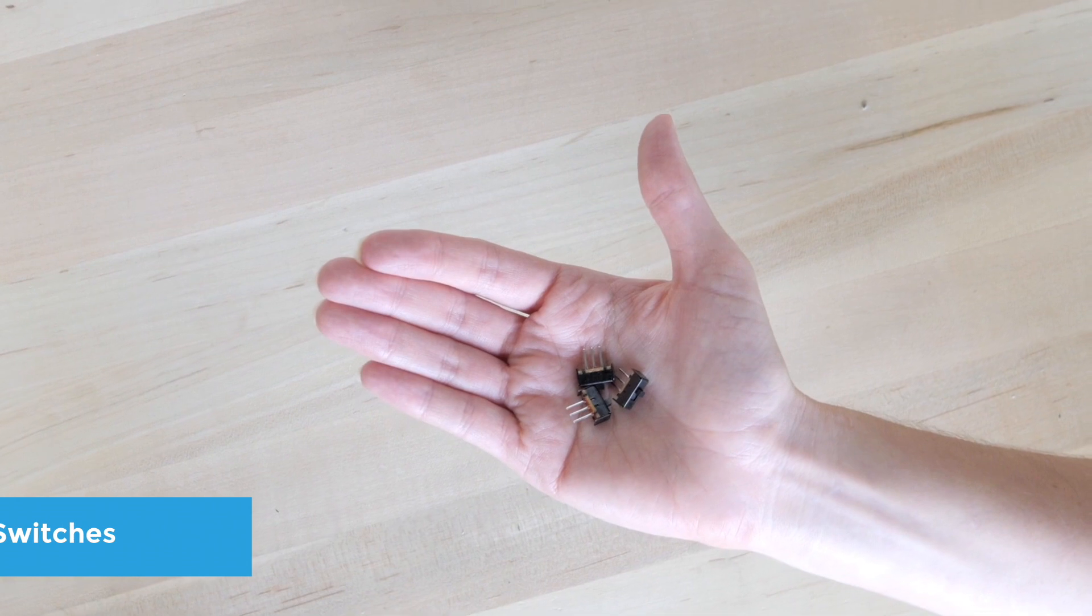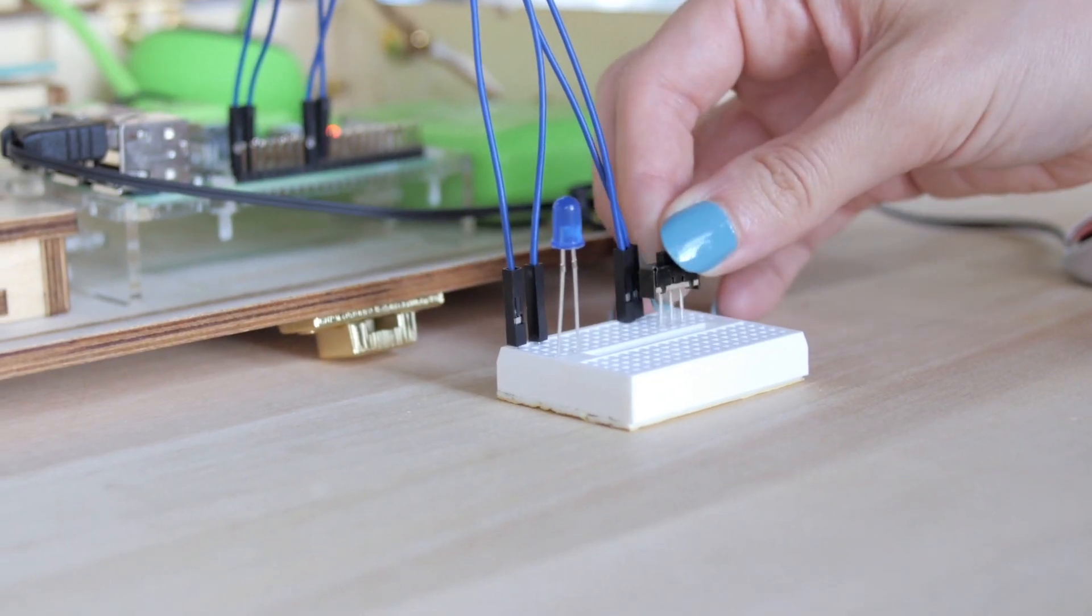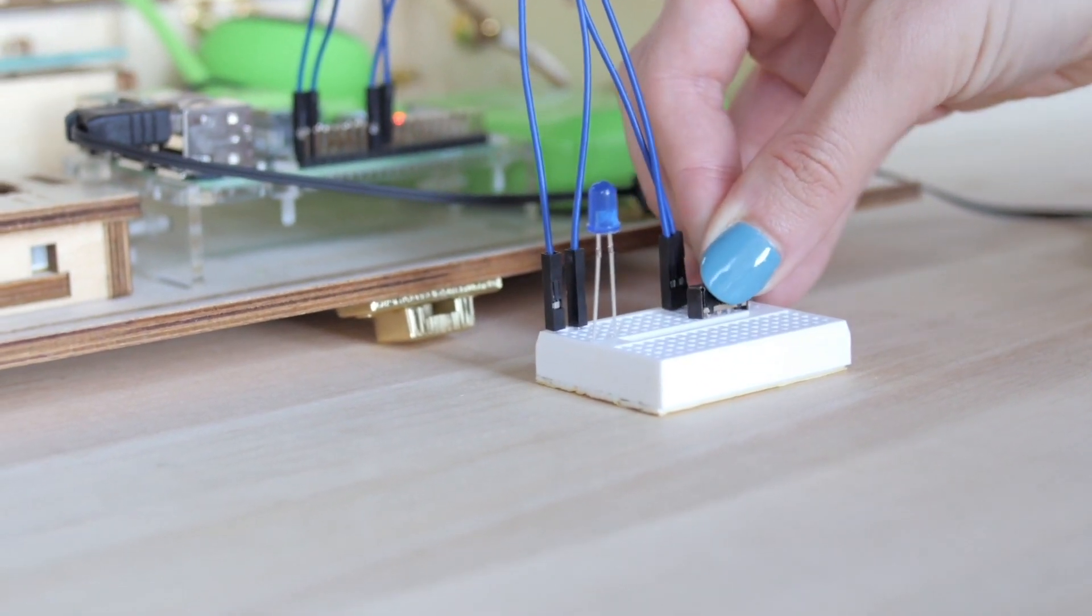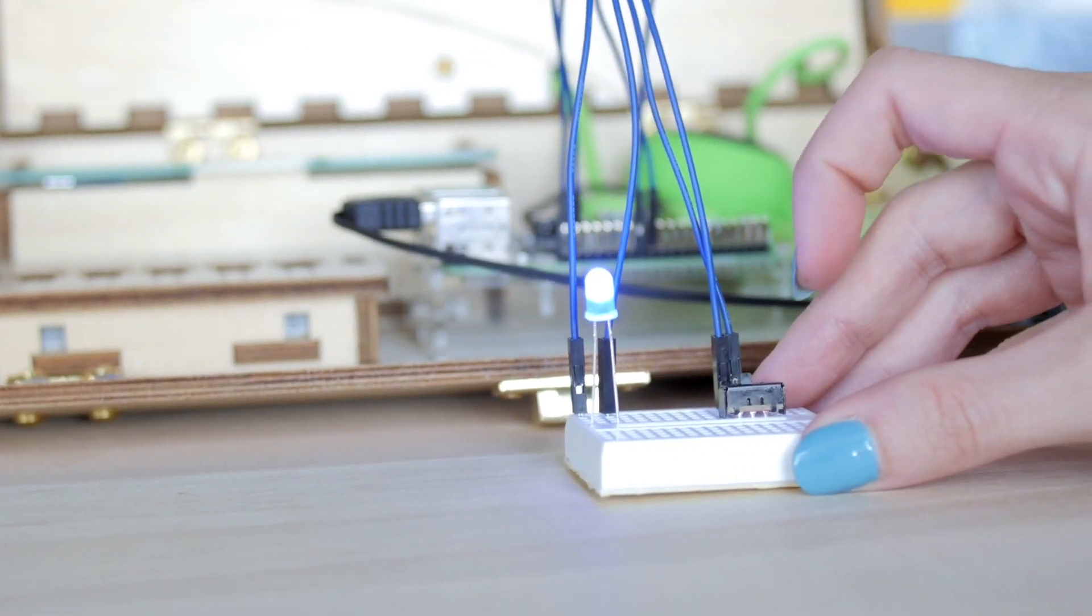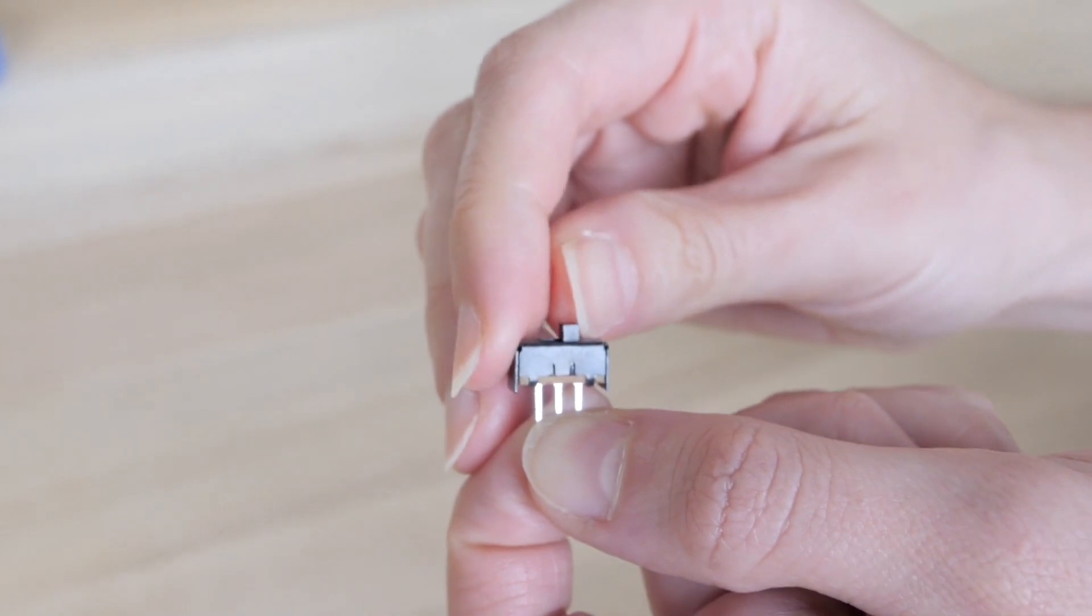Switches. Switches are a lot like buttons in that they are a way to control whether or not current can flow through the circuit. This allows you to turn things on and off instead of pressing down. Switches slide to complete the circuit.